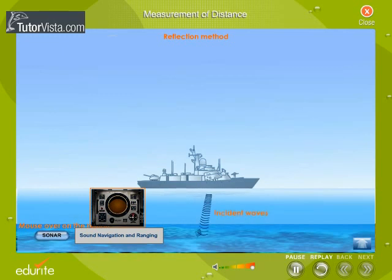Ultrasonic waves produced from the transmitter kept in a ship are directed towards the ocean floor. The ocean floor reflects these waves. By measuring the time interval t between the generation of the wave and reception of the echo, we calculate the depth of the ocean by using the relation S = (c × t)/2, where c is the velocity of ultrasonic waves.